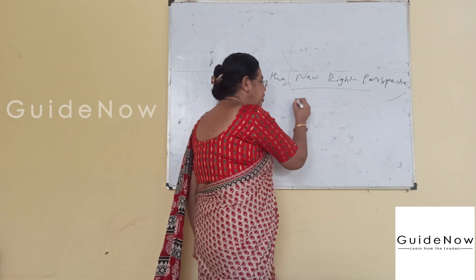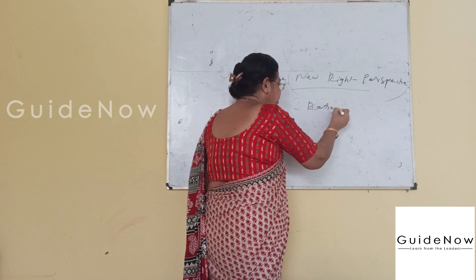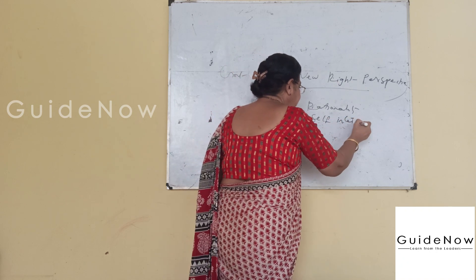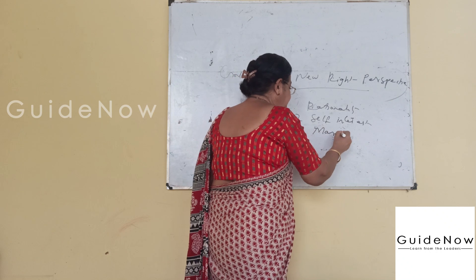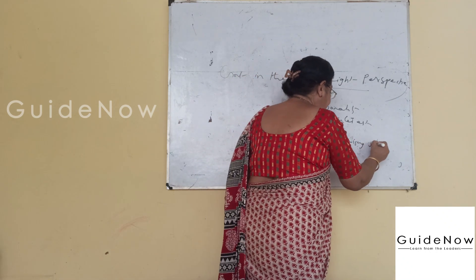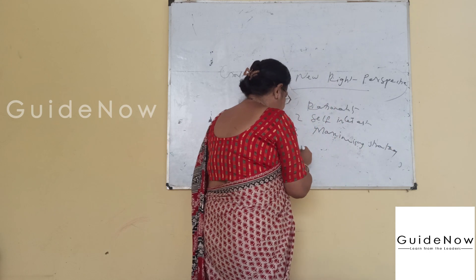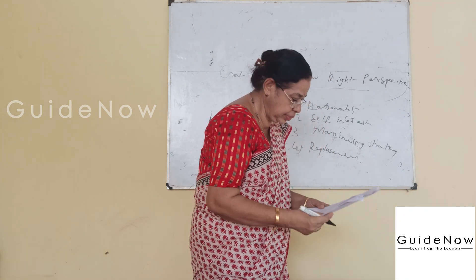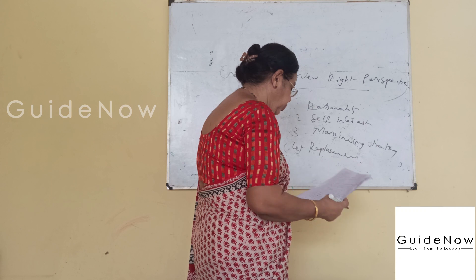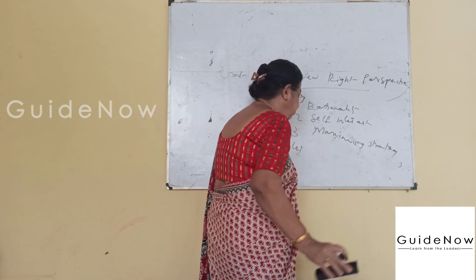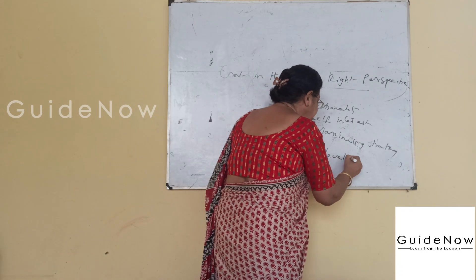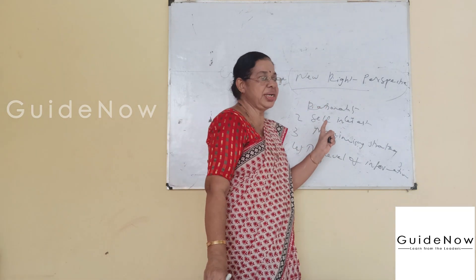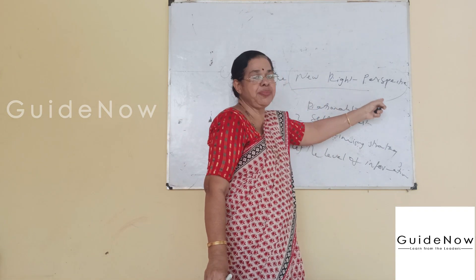The four important assumptions are: first, rationality; second, self-interest; third, maximizing strategy; and fourth, the level of information. These are the four important assumptions based on the New Right perspective.